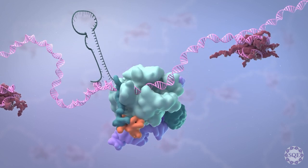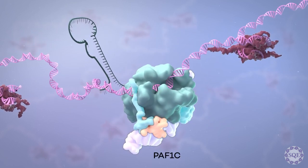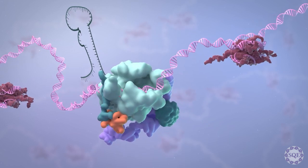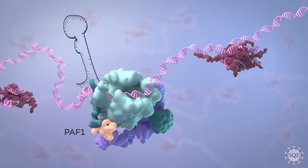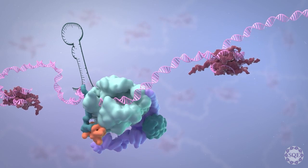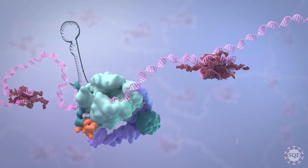The polymerase-associated factor I complex, PAF1C, is comprised of five subunits. However, the interaction between PAF1 and CTR9 is essential for PAF1 complex assembly.